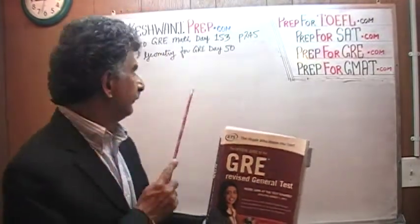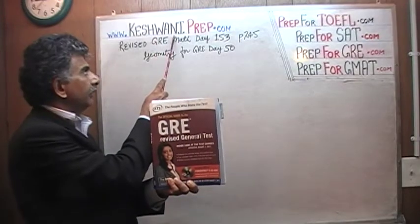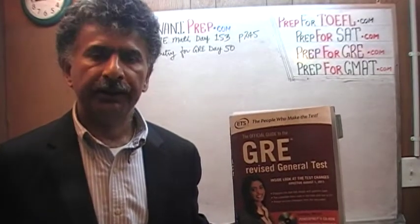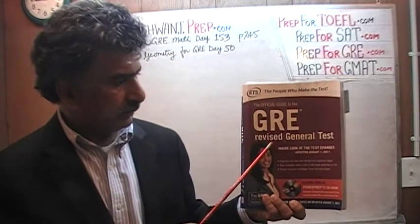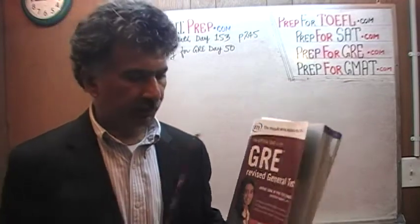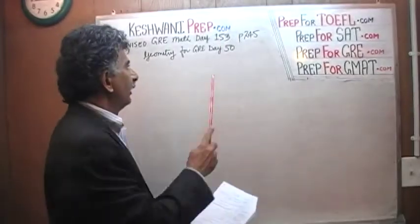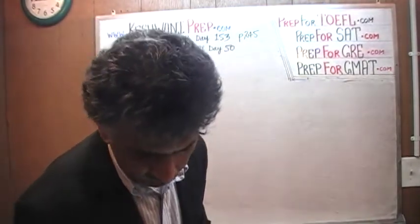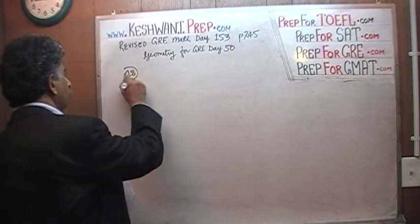Hello, my name is Keshwani — K-E-S-H-W-A-N-I. We are here because we want to prepare for the GRE. We have been solving GRE math questions out of this book, The Official Guide to the GRE. If you do not own this book already, purchase one immediately. The problem we are about to solve is on page 245, and today is lesson number 153, a continuation of yesterday's work. Problem number 18, part C is what we are working on.